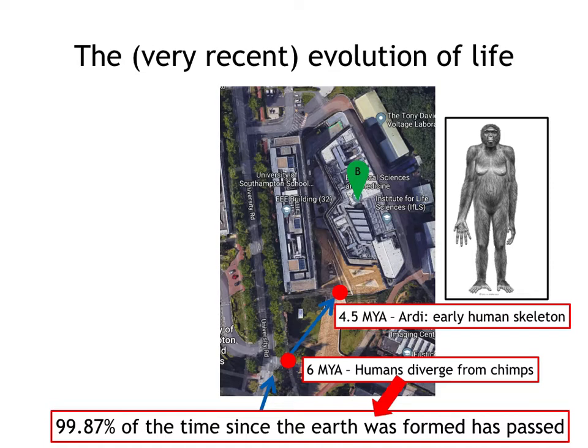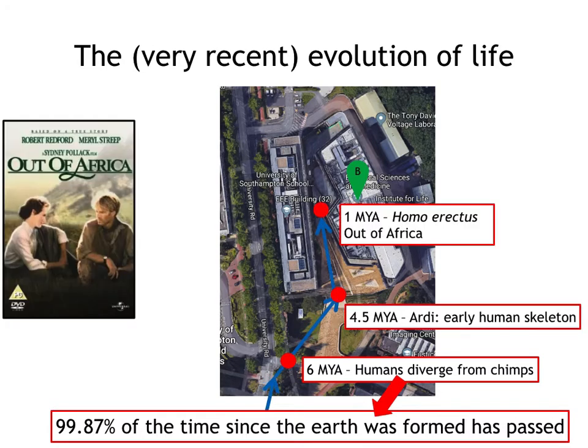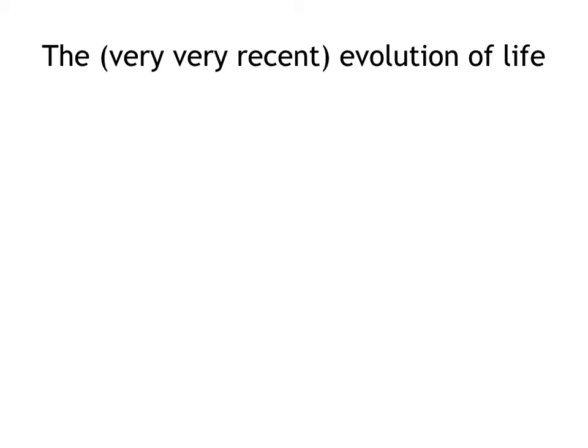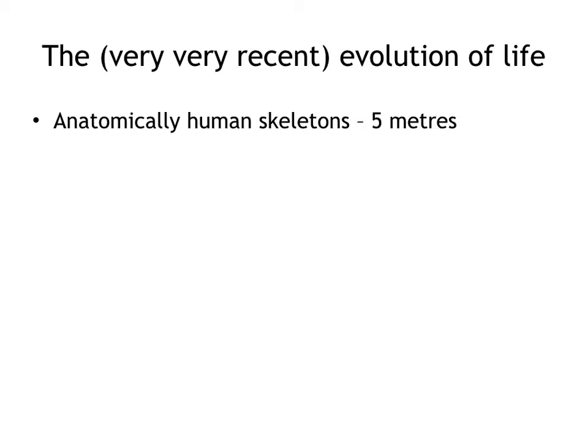At the flagpole just outside building 85, we are at 6 million years ago — the point when humans diverge from chimps. Walking up the steps we come to Ardipithecus, a skeleton far more recognisably human-like. As we come right up to the very door of building 85 we're at 1 million years ago — this is where Homo erectus first left Africa. This brings us to the very recent history of life on Earth: 5 metres from my desk we have anatomically recognisable human skeletons.